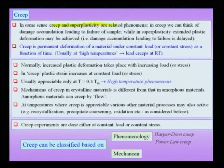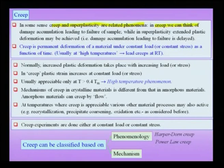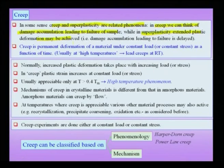A closely related phenomenon to superplasticity is creep. In creep, we sometimes get large elongations, and the mechanisms between superplasticity and creep are often very similar — both are low strain rate, high temperature phenomena. An important difference is that in creep, damage accumulates leading to failure, while in superplasticity, extended plastic deformation is achieved and accumulation of damage leading to failure is delayed.